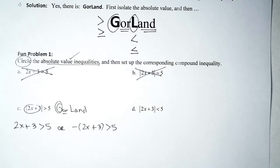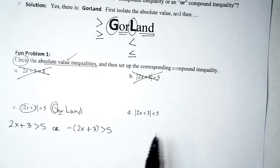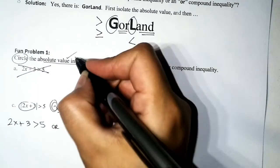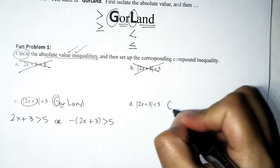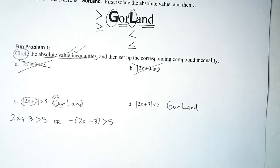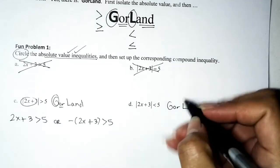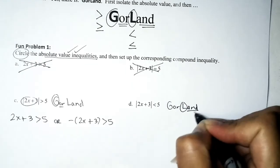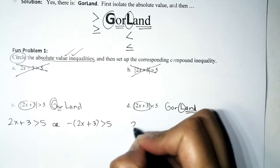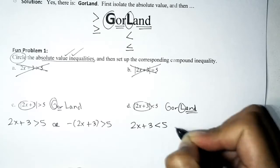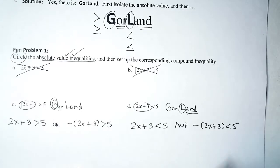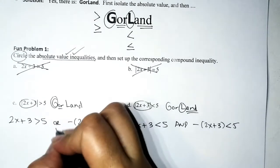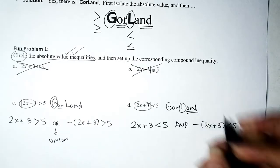We say: the inside is greater than five, OR its opposite is greater than five. Problem D also has an absolute value and inequality symbol — another absolute value inequality. We GORLAND it. We have a less-than symbol, so it's an AND kind of problem: the inside is less than five AND its opposite is less than five.